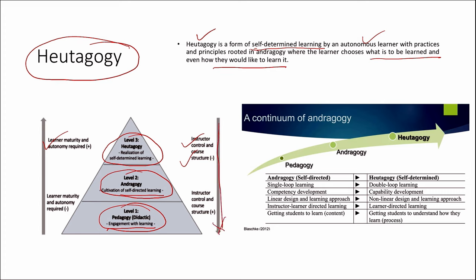As a continuum of andragogy: andragogy is self-directed while eutagogy is self-determined. Andragogy is a single loop learning; eutagogy is a double loop learning. Andragogy is for developing a competency; eutagogy is for developing a capability. Andragogy has a linear design and learning approach; eutagogy has a non-linear design. Andragogy involves instructor-learner-directed learning; eutagogy is learner-directed. In andragogy the students have content to learn; in eutagogy the students need to understand how they are going to learn — it is process-oriented.